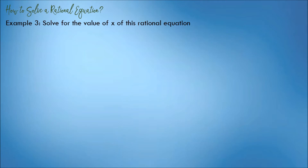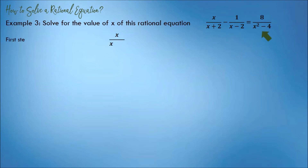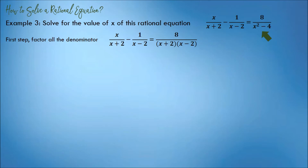Solve for the value of x of this rational equation: x over (x plus 2), minus 1 over (x minus 2), is equal to 8 over (x squared minus 4). The first step on this example is to factor all the denominators. There is no need to factor (x plus 2) and (x minus 2), but x squared minus 4 has a factor of (x plus 2) and (x minus 2).